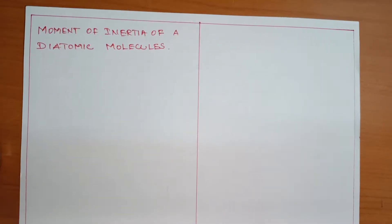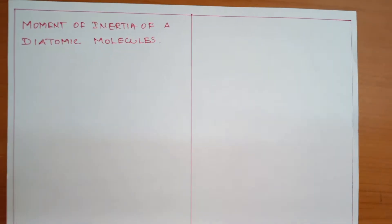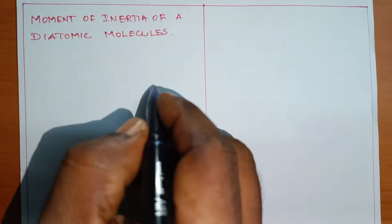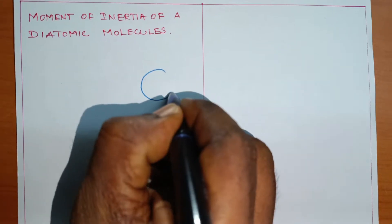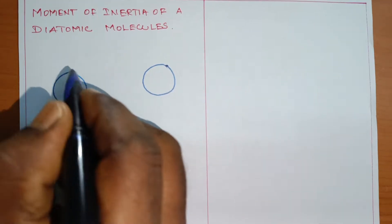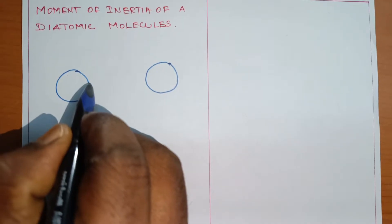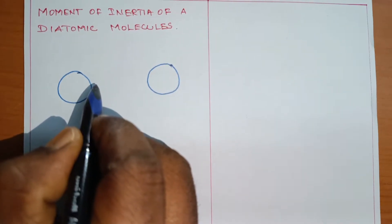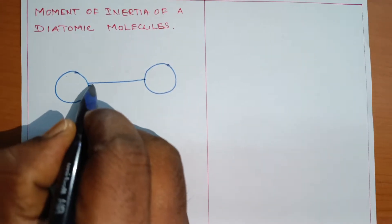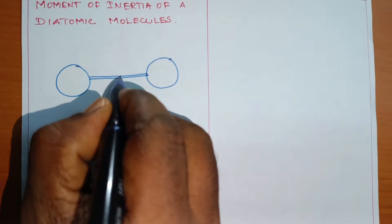We are considering a diatomic molecule, which contains two atoms of mass m1 and mass m2. We have two atoms. The center of mass is O.